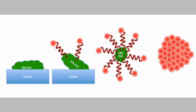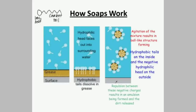The next topic is hygiene. Soap is actually made of chemicals. When soap reacts with water, it is used to remove dirt from surfaces and the body.